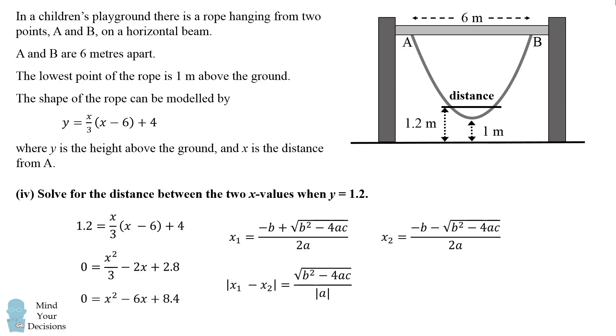We now take our quadratic equation where we have a equals 1, b equals negative 6, and c is equal to 8.4. This simplifies to be the square root of 6 squared minus 4 times 1 times 8.4 all over 1. And therefore, we get that the distance between the two x values is the square root of 2.4, which is approximately 1.55.